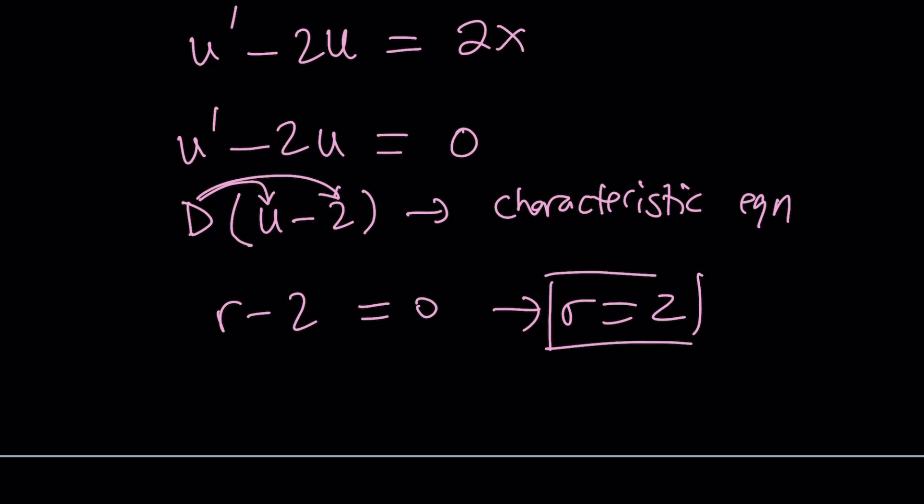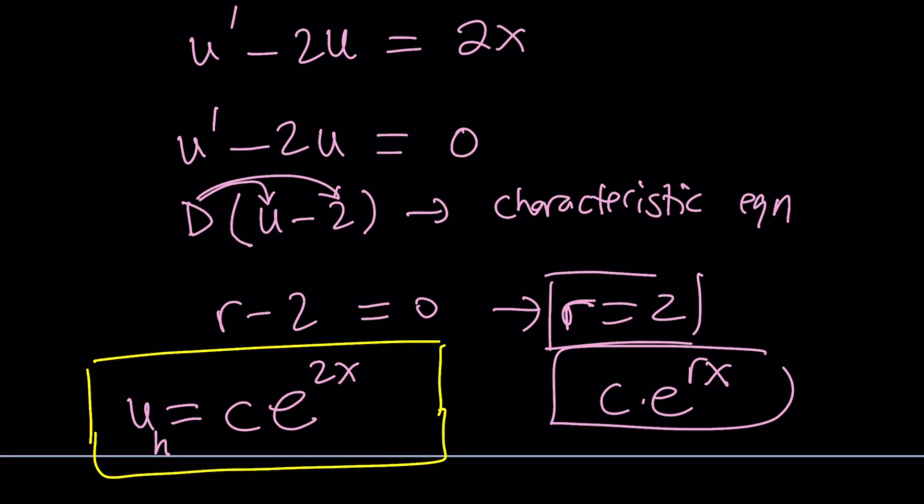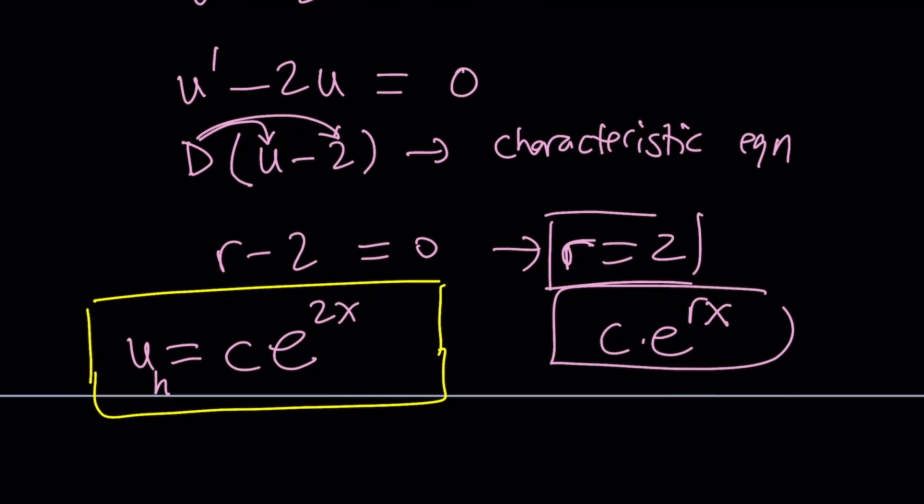And the root just becomes the power of e to the power of something x. So, we can basically write the solution from here. Since 2 is a root, in general, it's c times e to the power rx. But since r is 2, I'm going to write it as c times e to the power 2x. But notice that this is u sub h. This is the homogeneous solution. I haven't solved the non-homogeneous case yet.